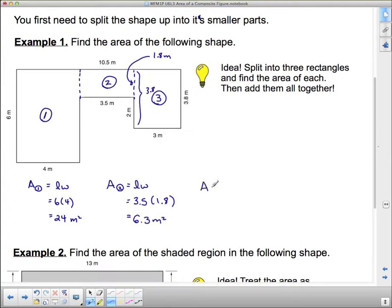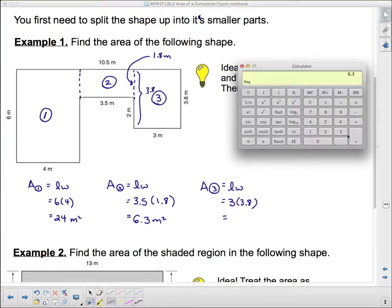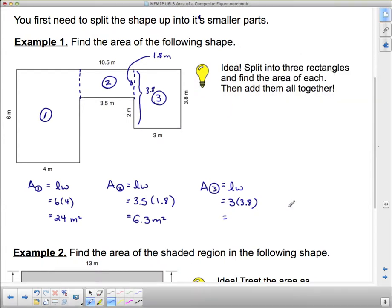And then we do our area of 3. And our area of 3 is still a rectangle. So we're doing 3 times 3.8. And 3 times 3.8 is 11.4. And that is square meters.